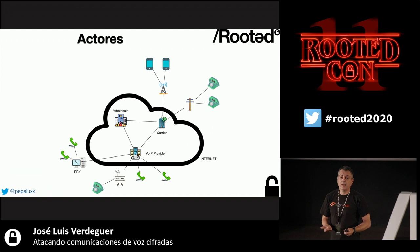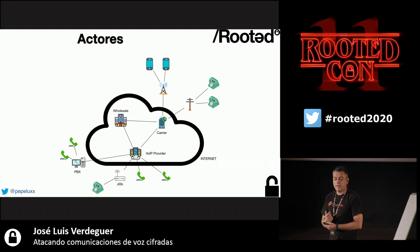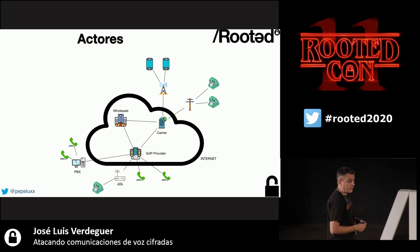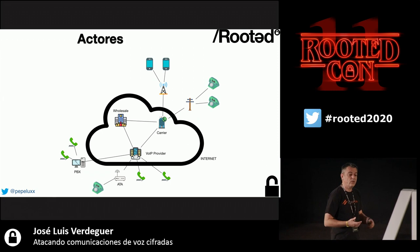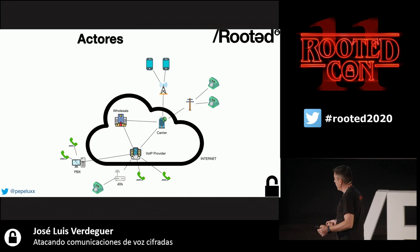For local calls, the VoIP provider gives the call to the carrier, who delivers it to the destination. For international calls, a VoIP provider doesn't know all carriers abroad, so a wholesale intermediary is used to move traffic between countries.